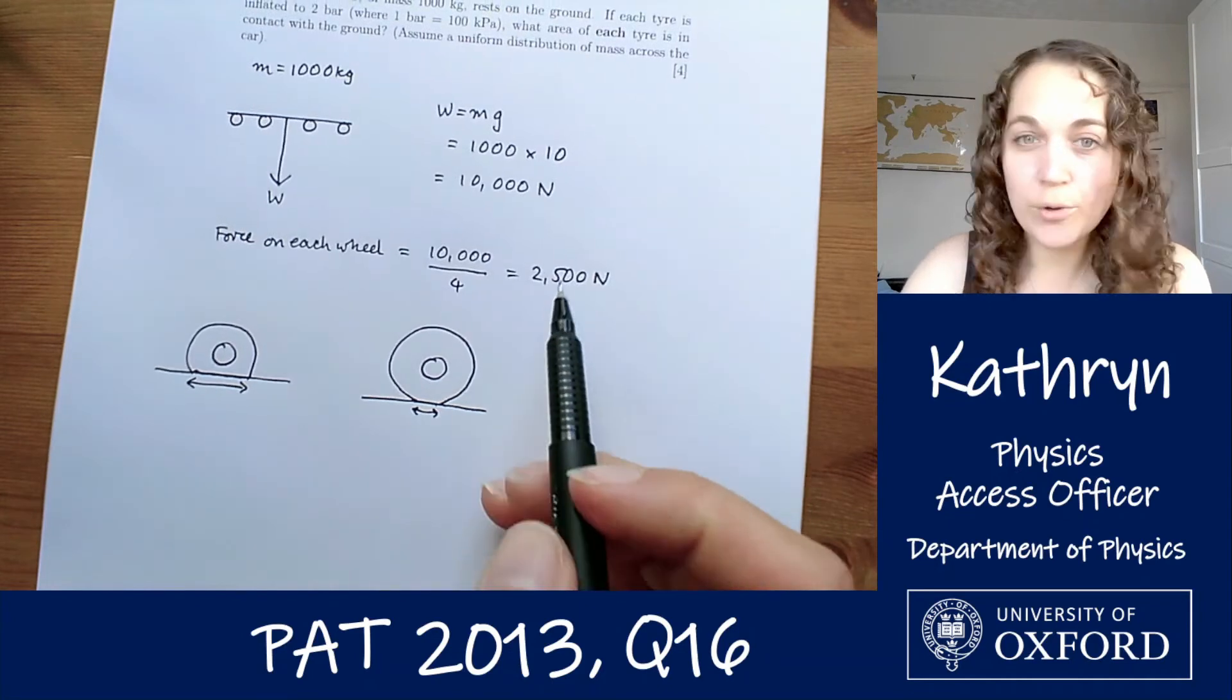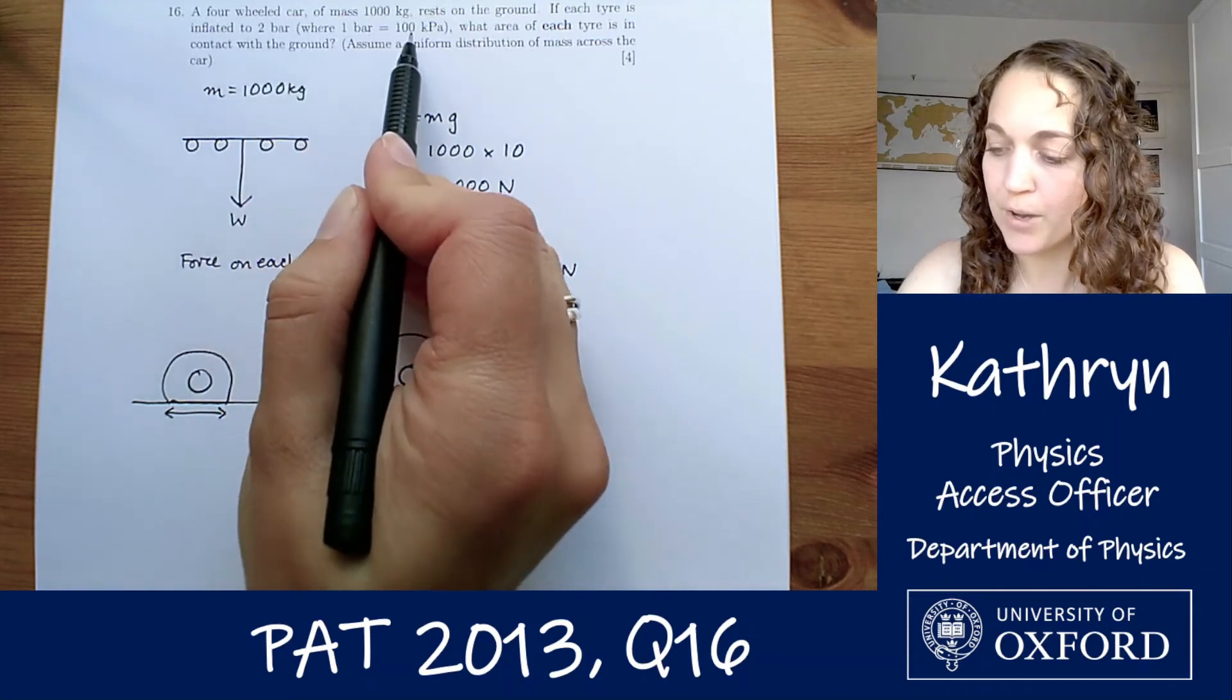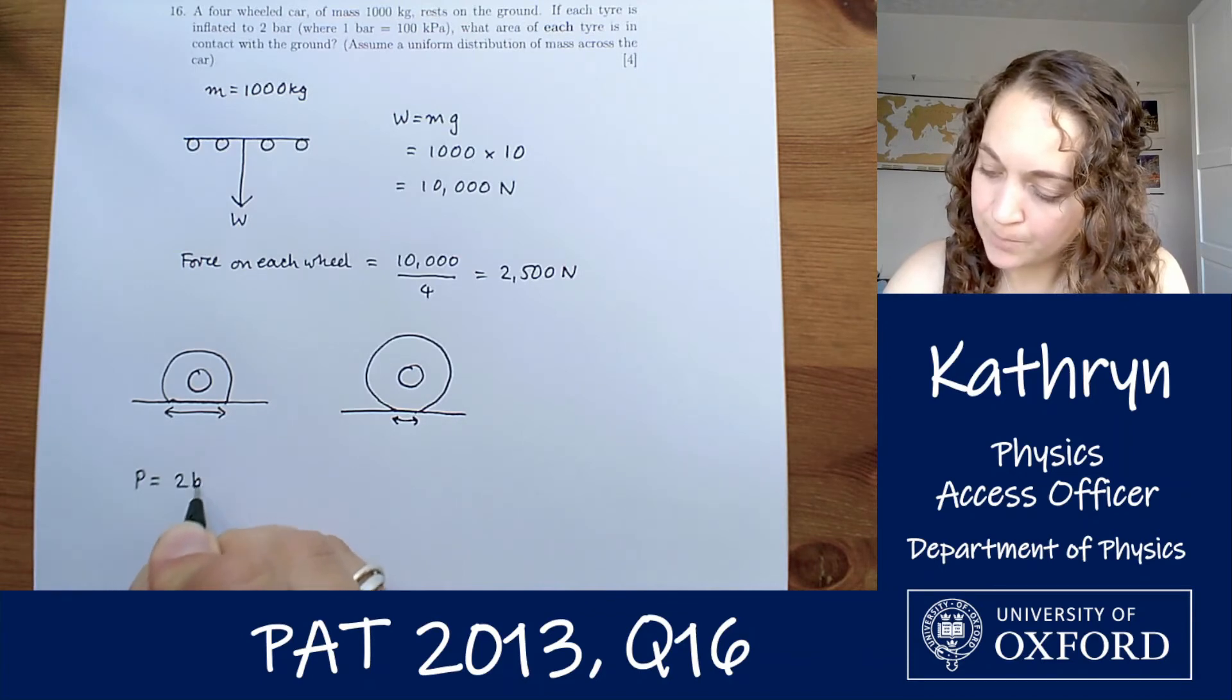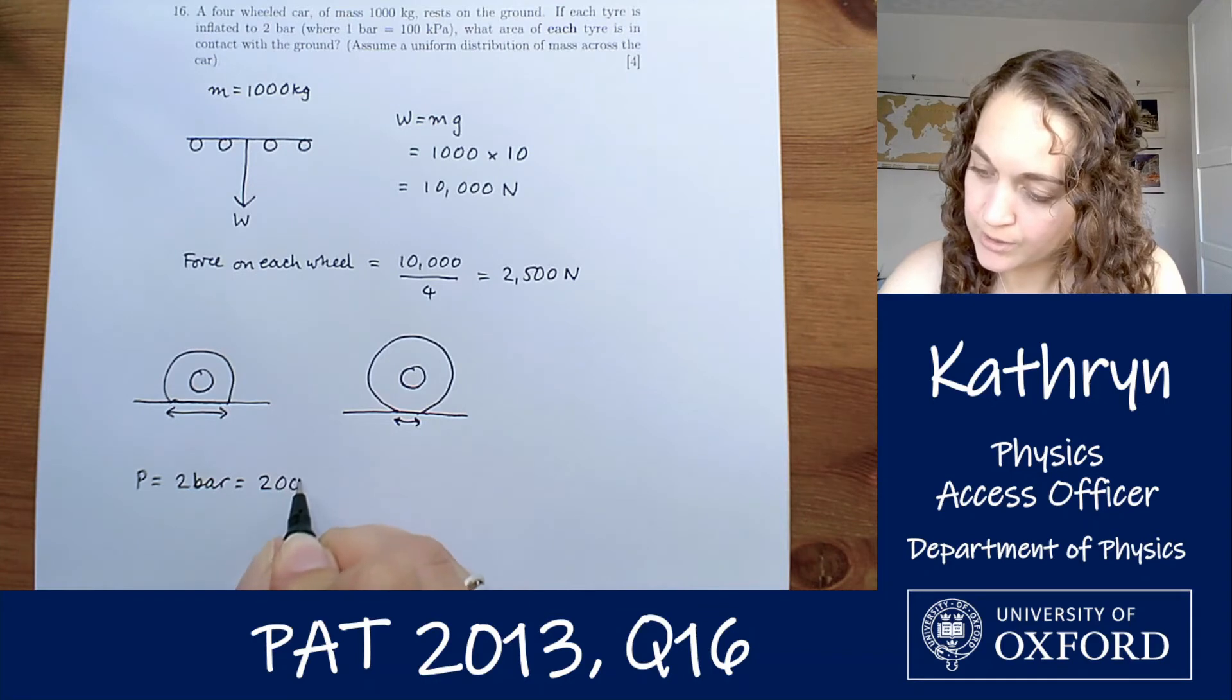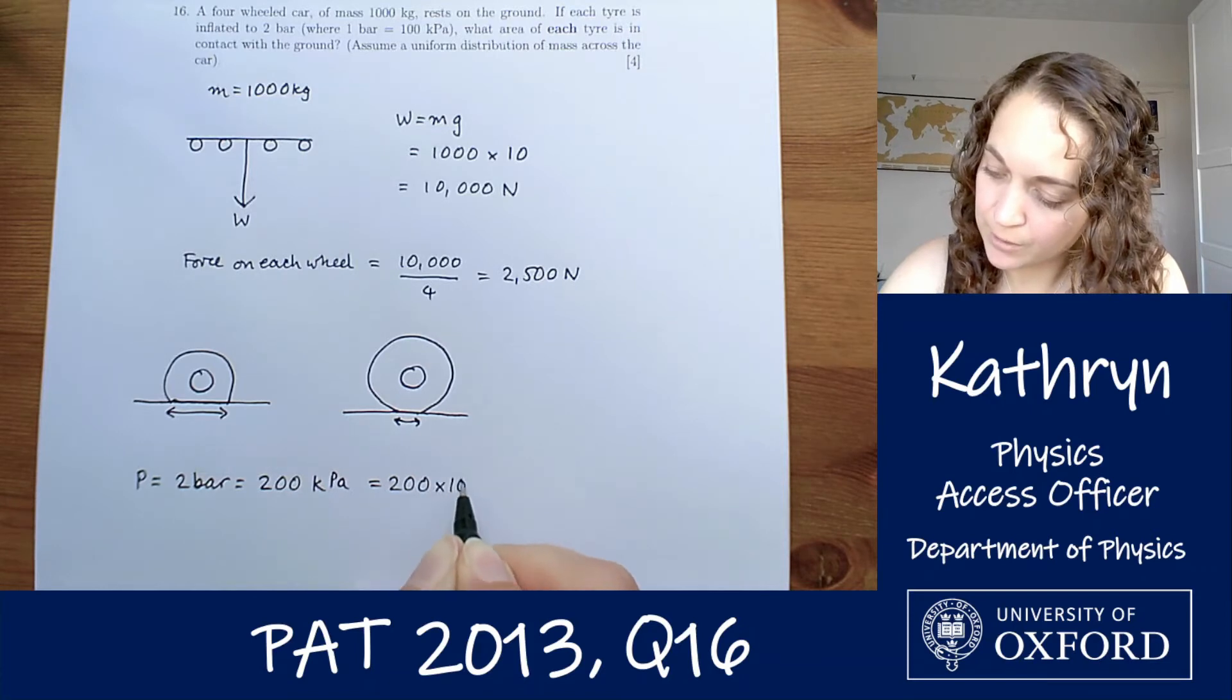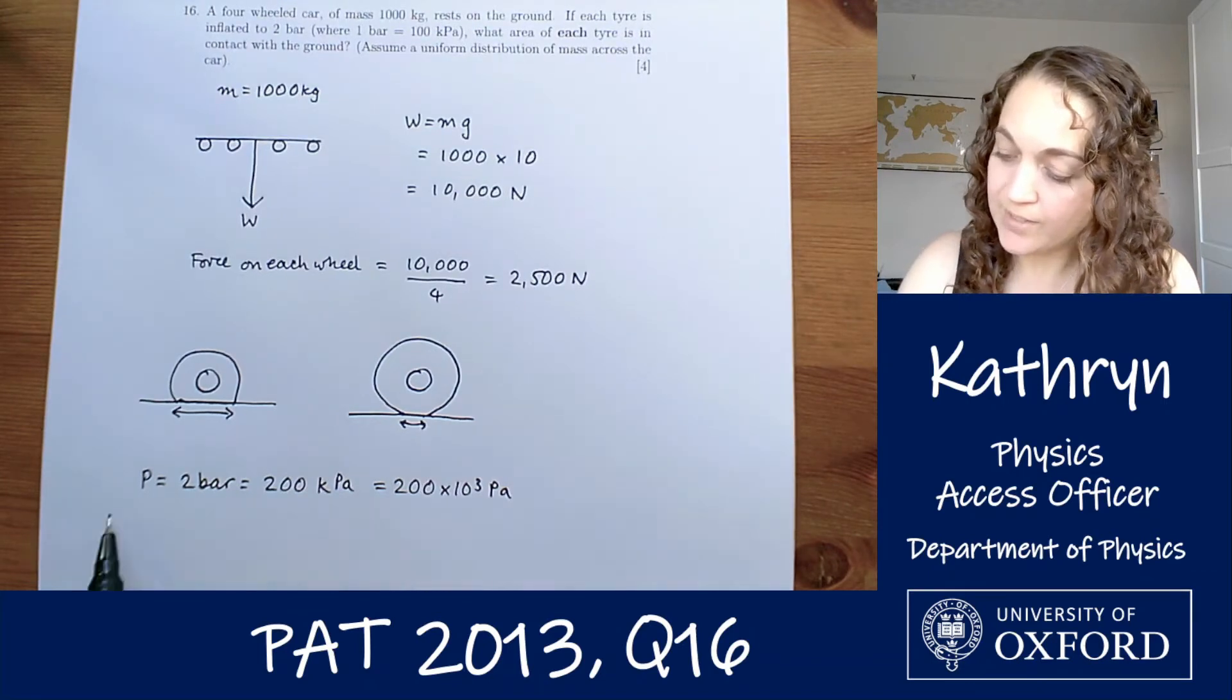So we've got a force of 2,500 newtons, we've got a pressure of two bar, where one bar is 100 kilopascals. So our pressure is 2 bar, which is 200 kilopascals, or 200 times 10 to the 3 pascals. OK, that's our pressure.